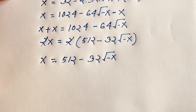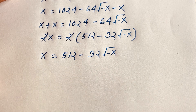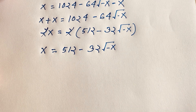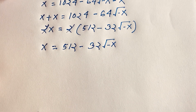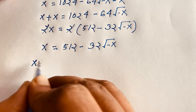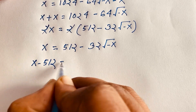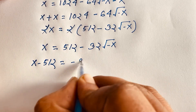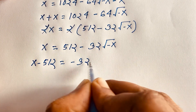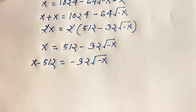Now I move the 512 to this side, so it becomes negative. We get x minus 512 is equal to negative 32 times square root of minus x.